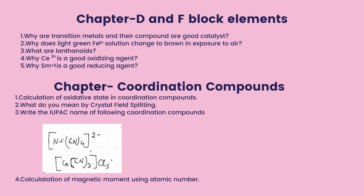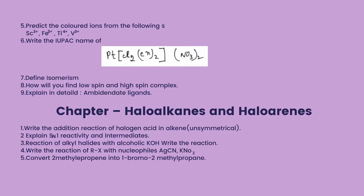Chapter: D-block Elements. Why are transition metals and their compounds good catalysts? Why does a light green iron(II) solution change to brown on exposure to air? What are lanthanoids? Why is Ce⁴⁺ a good oxidizing agent? Why is Sm²⁺ a good reducing agent? Coordination Compounds: Calculate the oxidation states in a coordination compound. What is crystal field splitting? Write the IUPAC name of [Ni(CN)₄]²⁻ and [Co(CN)₃Cl₃]. Calculate the magnetic moment using the atomic number. Predict the colored ion. Define isomerism. How will you identify low spin and high spin complexes? Explain bidentate ligands in detail.